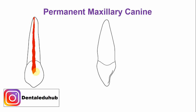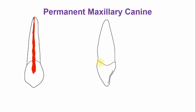This is the labio-lingual section of the tooth from the mesial aspect. From the labio-lingual aspect, the pulp chamber is more wide labio-lingually, or labio-palatally, as compared to the mesial-distal section. A similar pattern is seen in the canal as well.